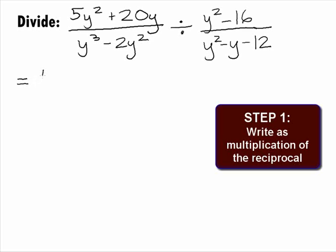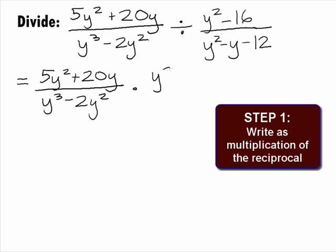In Step 1, we want to write the division as multiplication of the reciprocal. The first rational expression will remain 5y squared plus 20y over y cubed minus 2y squared, times, and taking the reciprocal of the second rational expression, we get y squared minus y minus 12 over y squared minus 16.